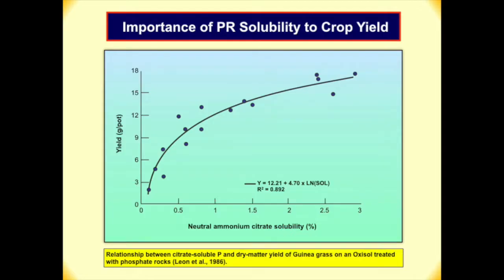Total P2O5 — don't ever look above that alone. You can have 20% or 29% and it has nothing to do with the rock's reactivity. Solubility is so important for the crop response. This chart shows crop yield versus neutral ammonium citrate — it's not linear, but it's correlated quite well. Therefore, to market phosphate rock, total P2O5 relates to transportation cost, but agronomic effectiveness deals with solubility, and you have to label the solubility.